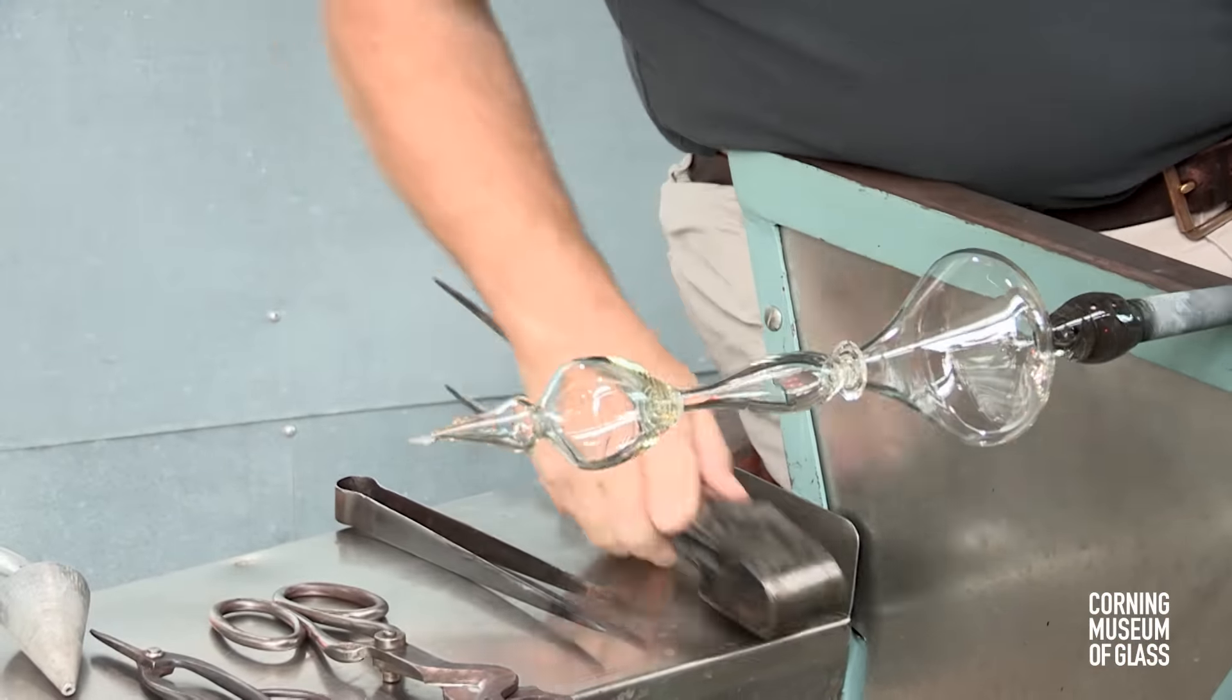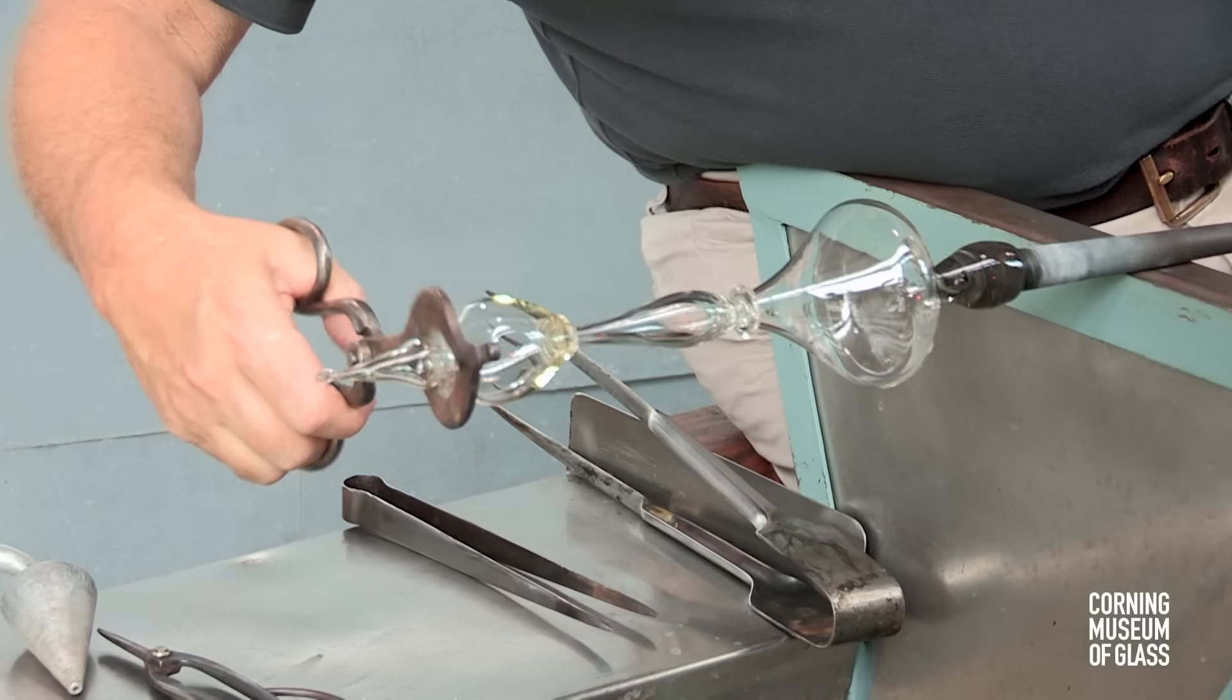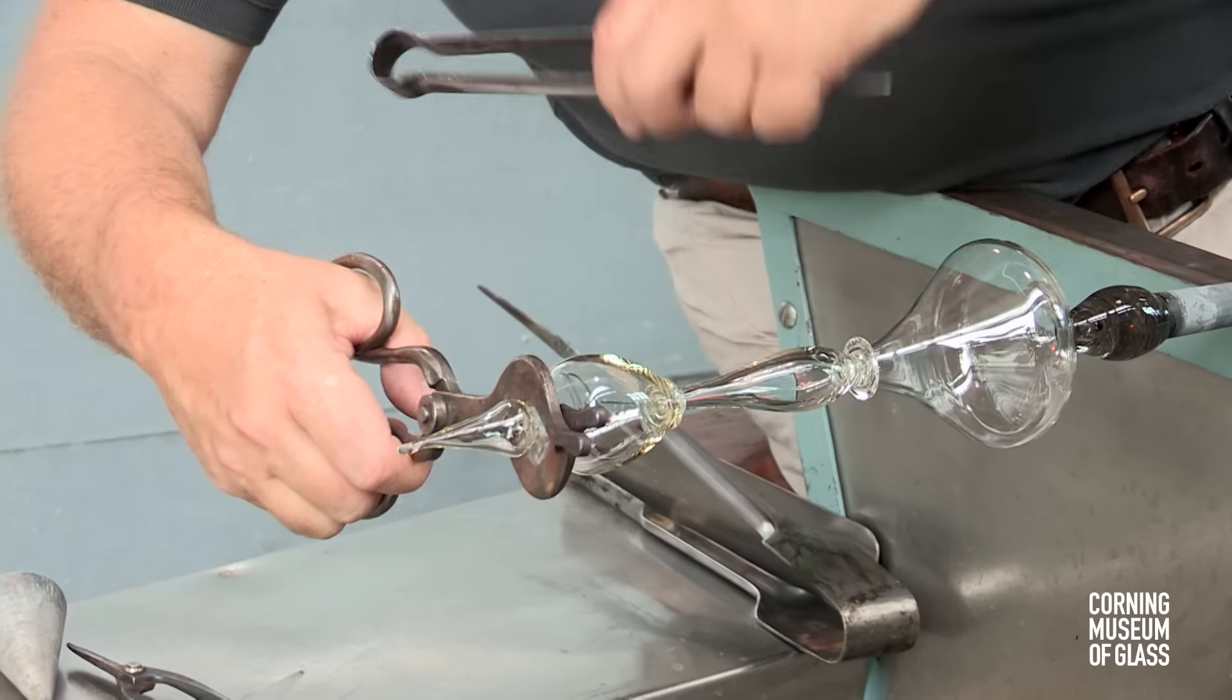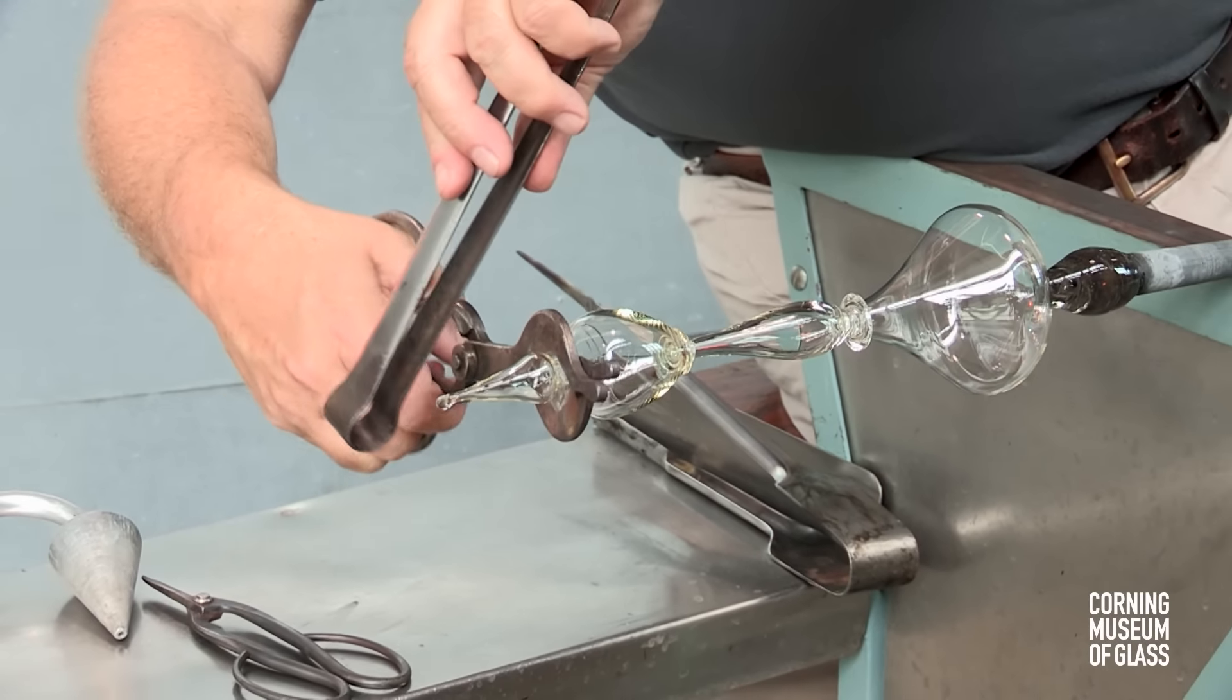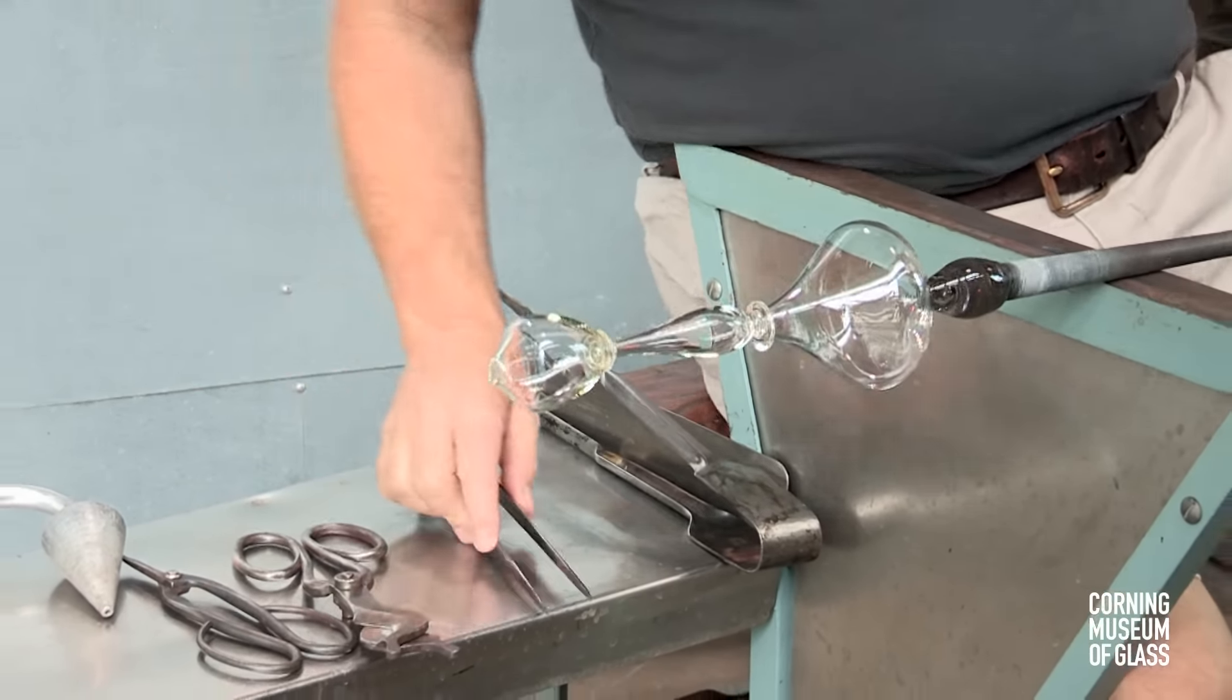A constriction is made in the bubble, excess glass tapped off, and this will leave a hole in the end, and the hole will become the edge of the foot.